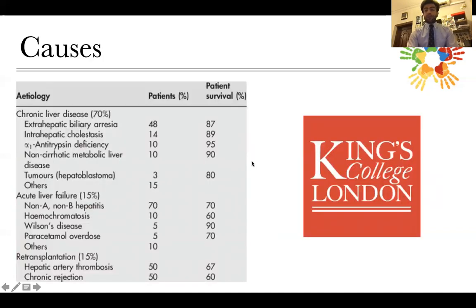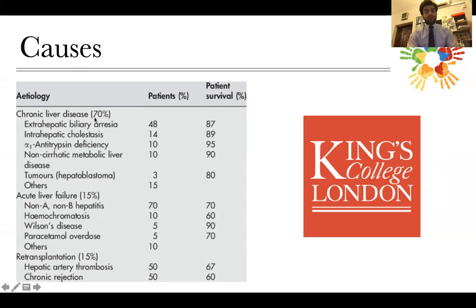There are many causes for chronic liver disease, and they differ according to region — Europe differs from Asia and other parts of the world. According to King's College London, the causes of liver diseases in children are divided into chronic, acute, and those with re-transplantation. In chronic liver diseases, the most common causes are biliary atresia, alpha-1 antitrypsin deficiency, non-cirrhotic metabolic liver disease such as galactosemia, tumors such as hepatoblastoma, and others including cystic fibrosis, Wilson disease, and polycystic liver disease.